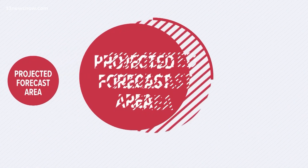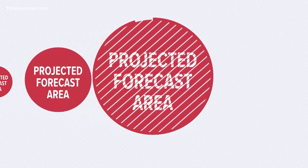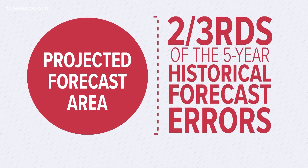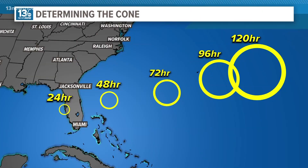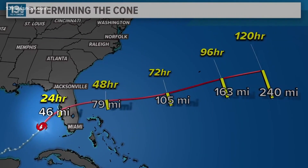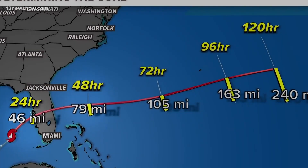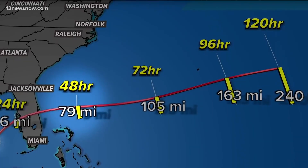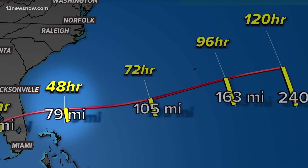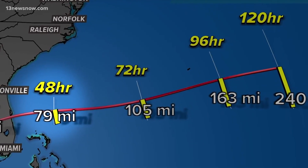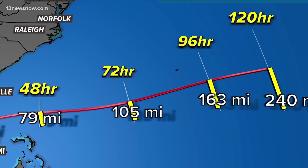The cone is the projected forecast area at specific points in time. The size of each circle is determined so that two-thirds of the historical forecasts over the past five years wound up within miles of where the storm actually was. Out 24 hours, two thirds of the time the storm fell within 79 miles. The farther out you go, the larger the circle gets.